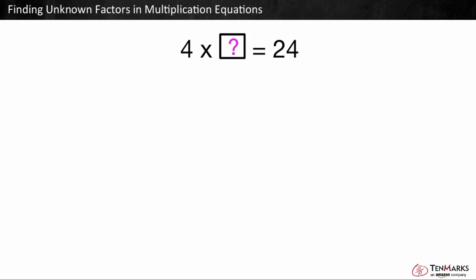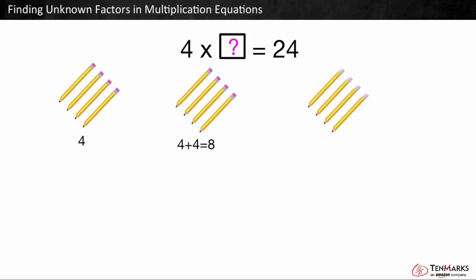Multiplication is the same as adding equal groups. 24 is the total. 24 is equal to how many groups of 4? To find out, we can keep adding 4 until we get a total of 24. One group of 4 is 4. Two groups would be 4 plus 4, which is equal to 8. And three groups, 4 plus 4 plus 4 is equal to 12.